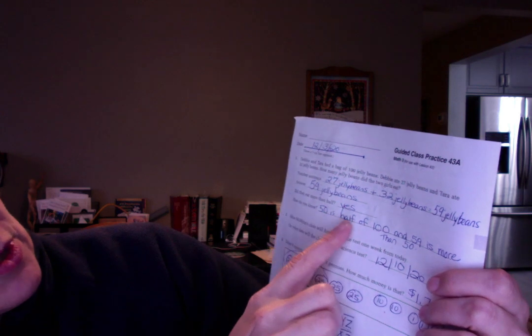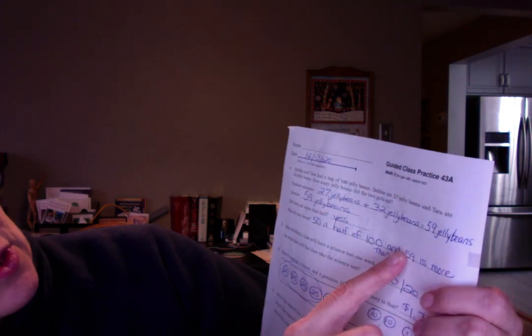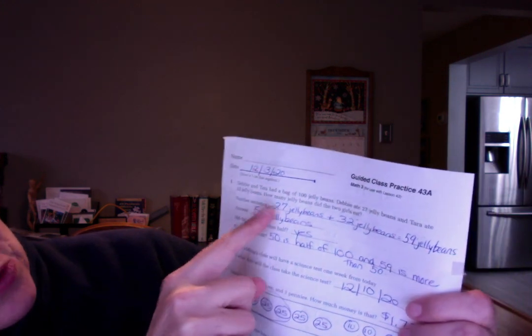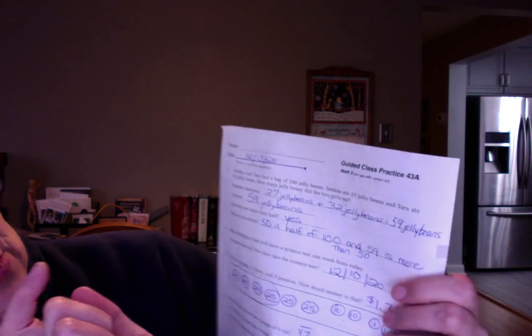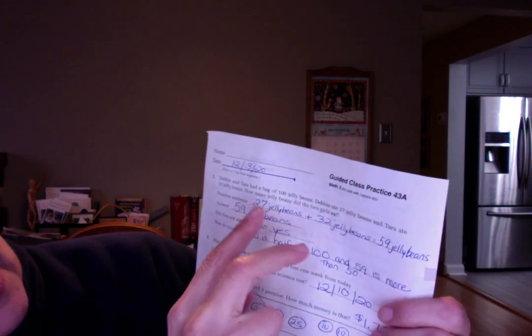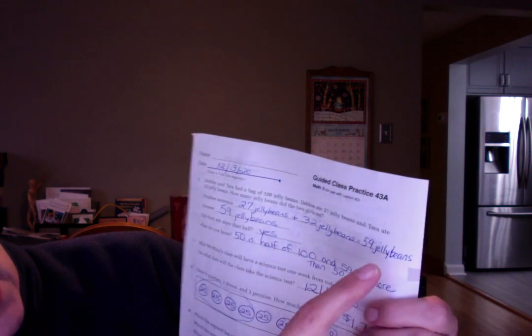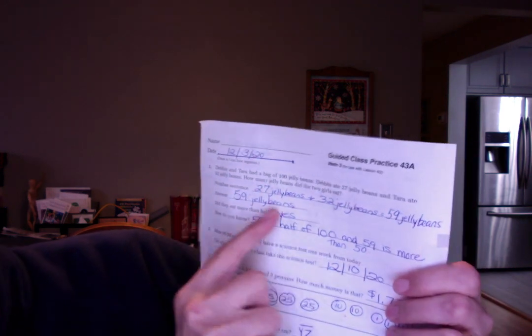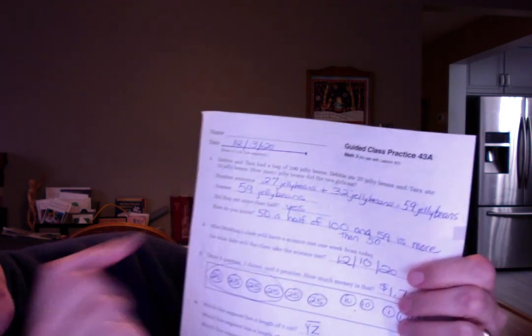Debbie and Tara had a bag of 100 jelly beans. Debbie ate 27 jelly beans and Tara ate 32 jelly beans. How many jelly beans did the two girls eat? So you need a number sentence showing that. 27 jelly beans plus 32 jelly beans and then you add that together, right? 50 and 9 makes 59 jelly beans. And then you write the answer again with a label, 59 jelly beans.